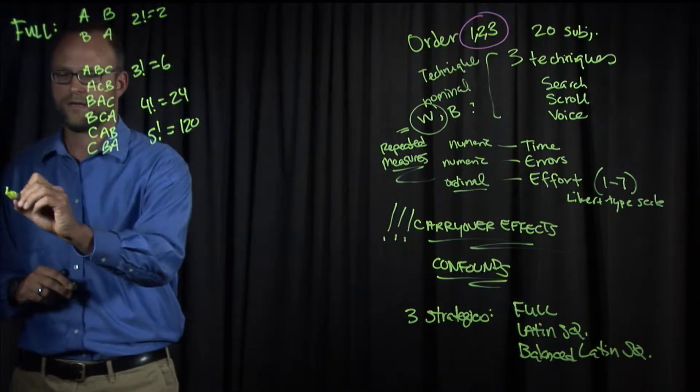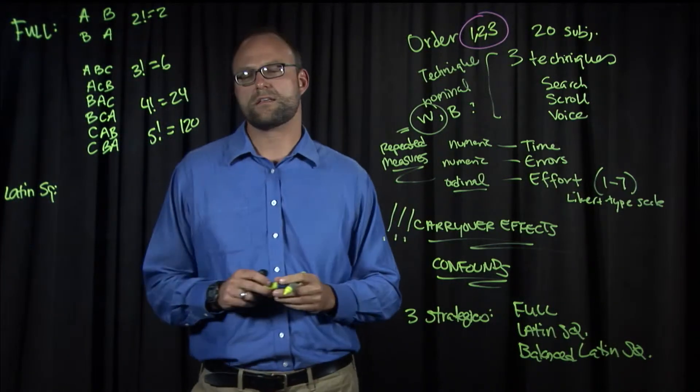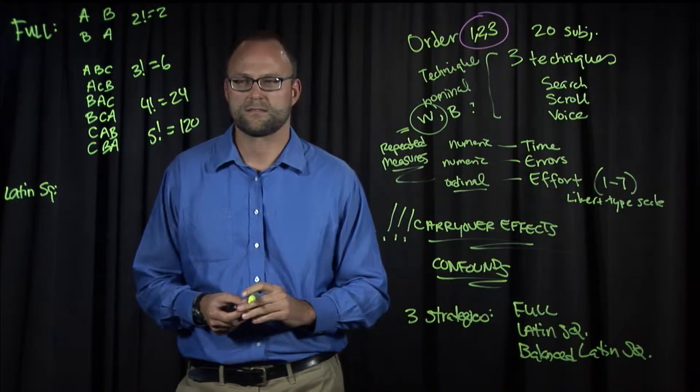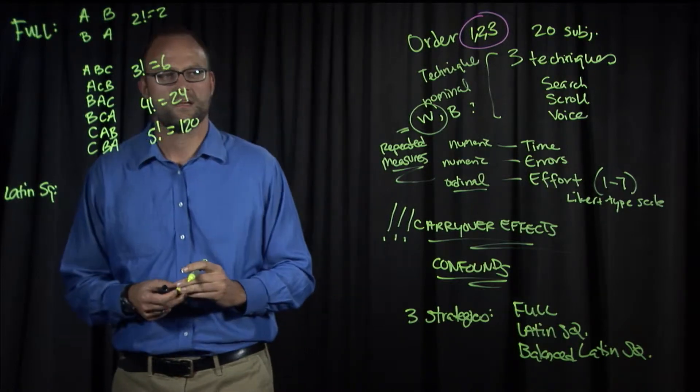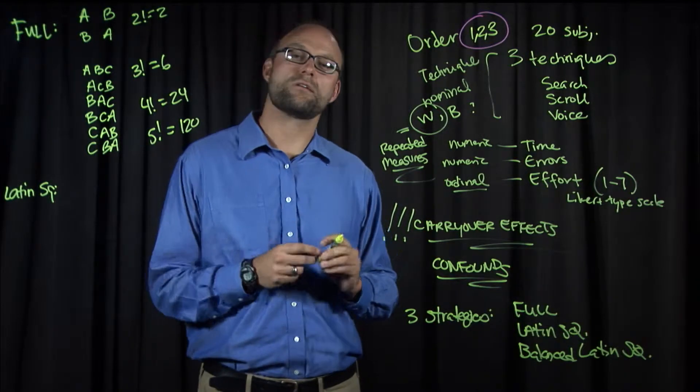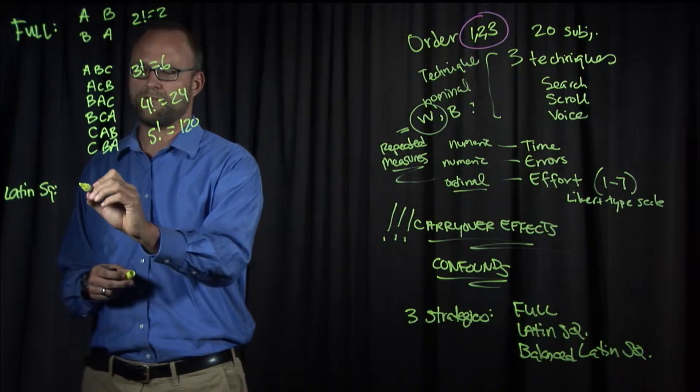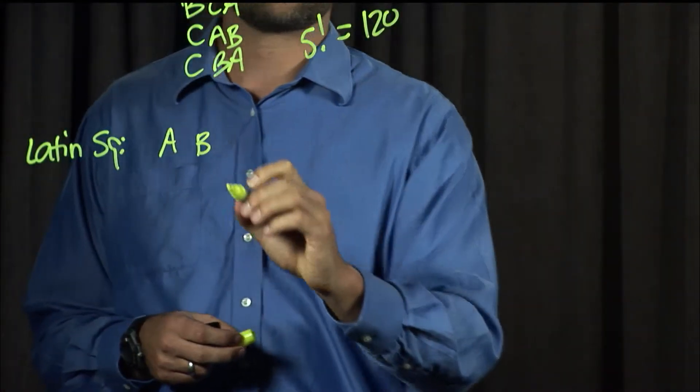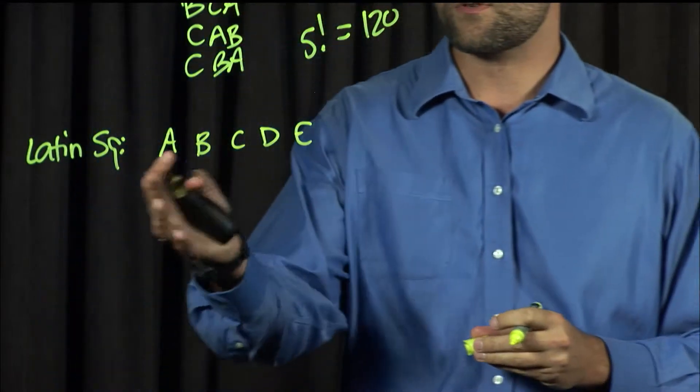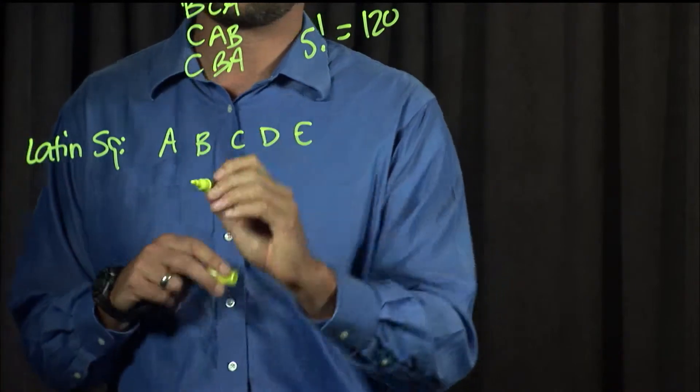Let's consider something called Latin squares. Latin squares just needs n sequences for n conditions, and therefore multiples of n subjects. That sounds nice. It has the property where each condition occupies each position in the order exactly the same number of times. We'll go with five conditions, A, B, C, D, and E. What you do is, you start off with your top sequence, and then you kind of rotate them around.